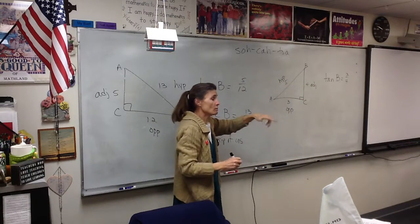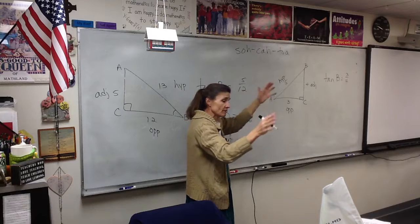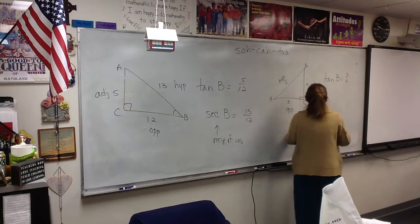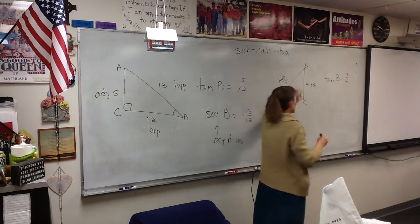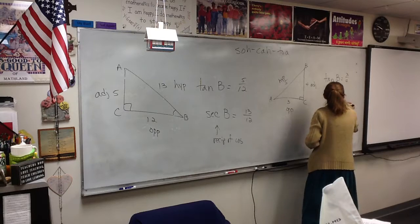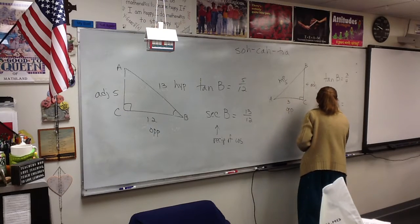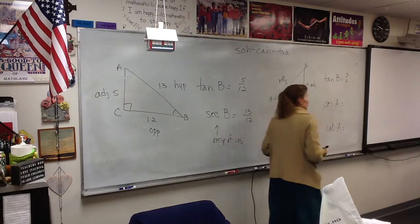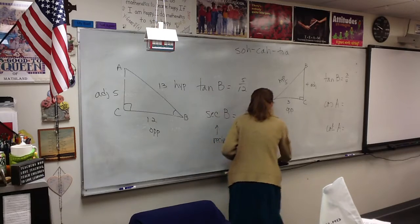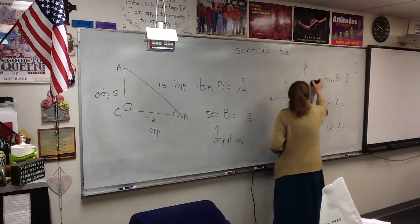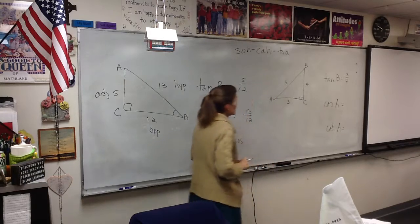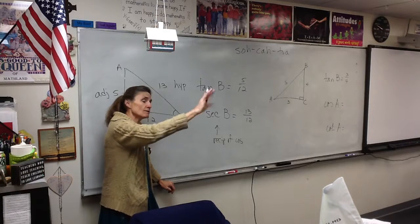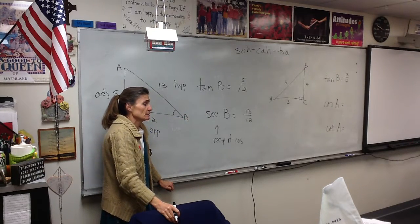Now, on your own, some of you came with paper, some of you didn't. Hopefully, figure it out somehow. I want you to answer these two questions for me, on your own. Using this picture, I want to know the cosine of angle A. And I want to know the cotangent of angle A. So using this picture, I want you to tell me the cosine and cotangent of angle A. No talking. There doesn't need to be any talking.